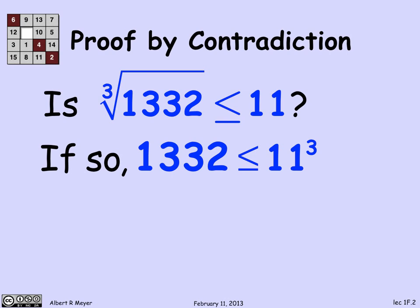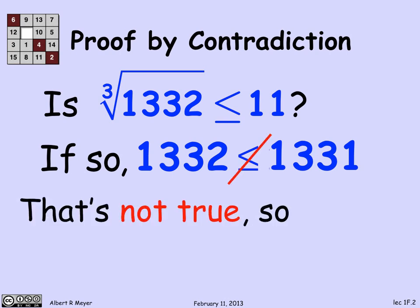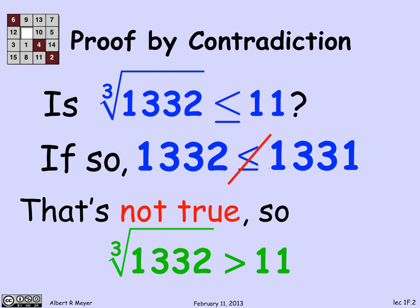Now, 11 cubed is a lot easier to compute than the cube root of 1,332. As a matter of fact, 11 cubed is 1,331. Wait a minute — I've just concluded that 1,332 is less than 1,331. That's obviously not true, which means that my assumption that this inequality held doesn't make sense. It leads to this immediate contradiction, which means that the inequality doesn't hold.